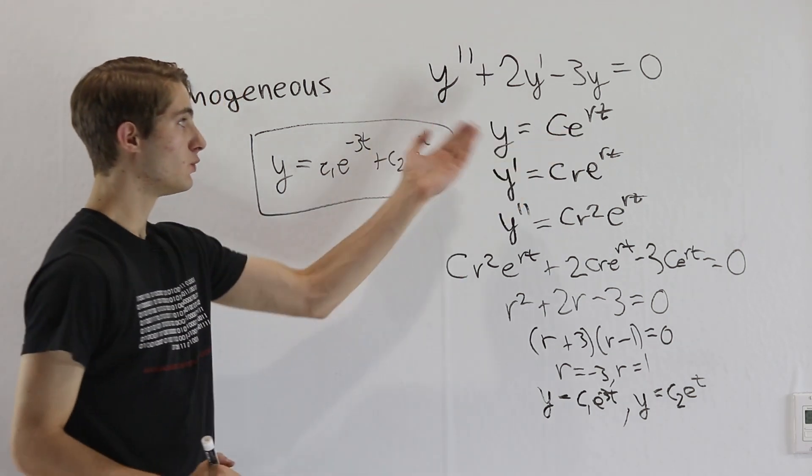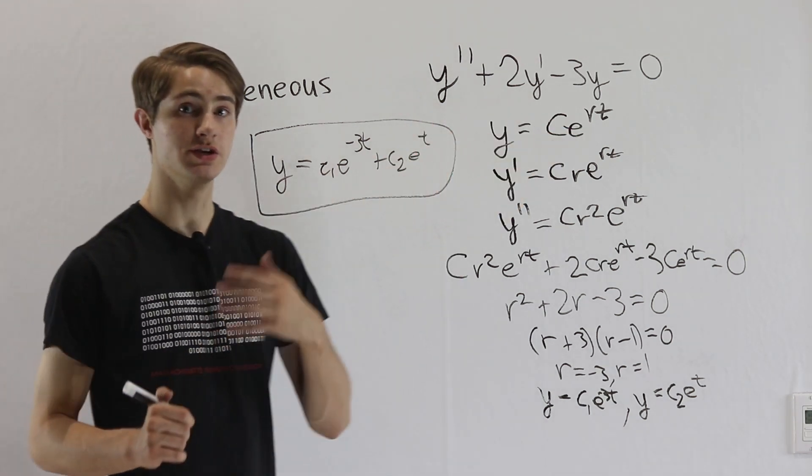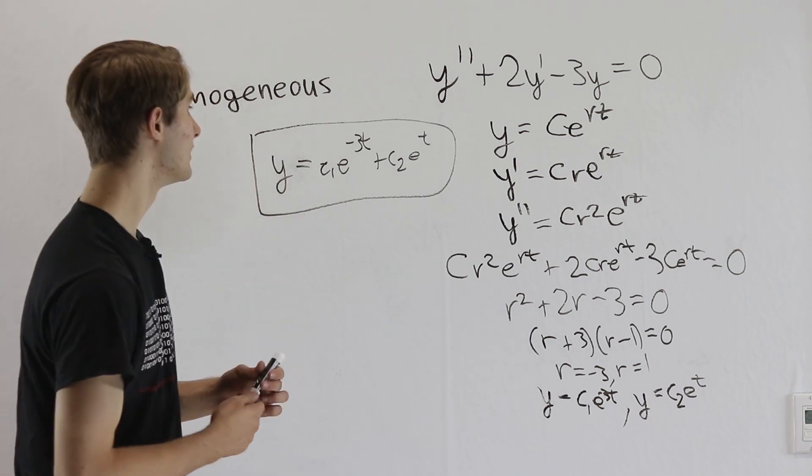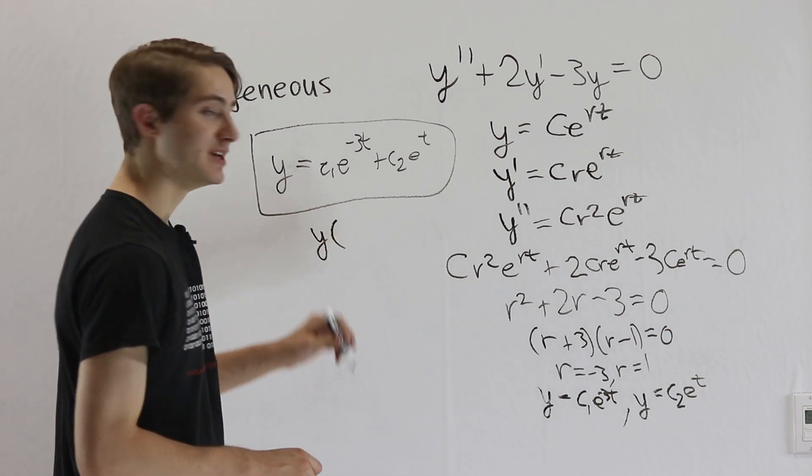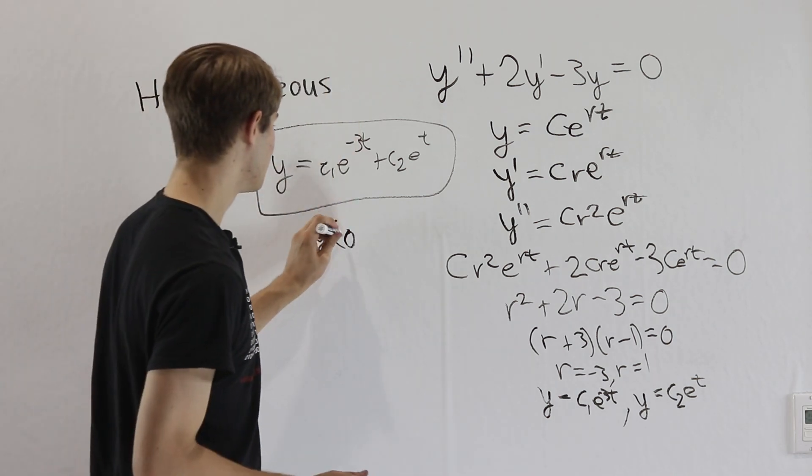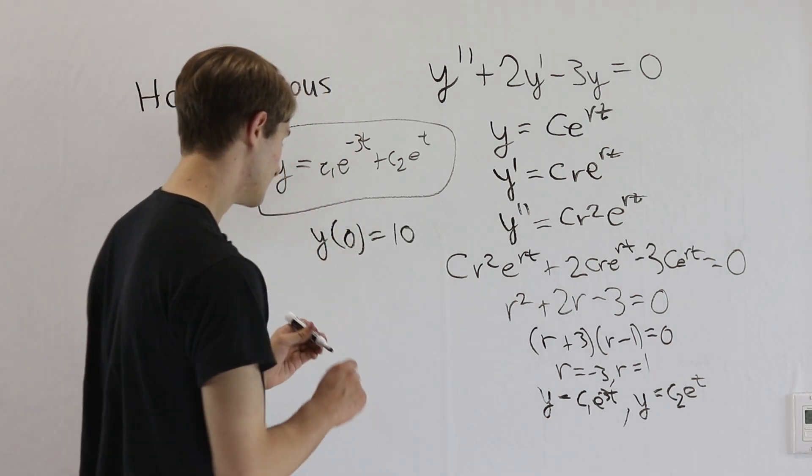Because, for example, say that this y function is talking about the vertical motion of a particle, and the problem says, well, at time t equals zero, the particle is 10 feet up in the air. So then we would have y of zero equals 10.